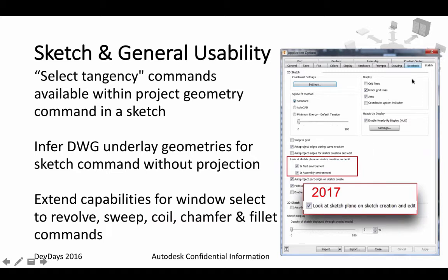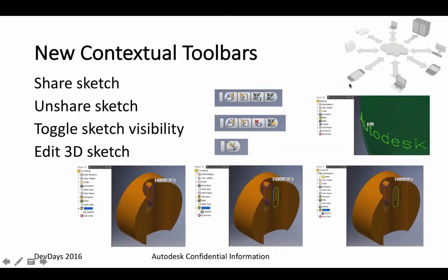Some sketch and general usability improvements: inside the application options, the 'look at sketch plane on sketch creation and edit' setting will now be a part-or-assembly-specific setting, so you can specify it differently for these two environments. There will also be a couple of new contextual toolbars — not providing new functionality, but making it much easier to access things like sharing a sketch, unsharing, toggling sketch visibility, or editing your 3D sketch.